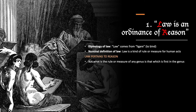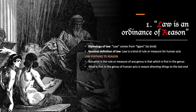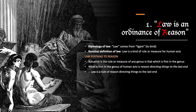What is the rule or measure of any genus of things is that which is first in the genus. For instance, the rule of all yards is the yardstick kept in France, which measures whether or not something is the length of a yard. What is first in the genus of human actions, however, is reason directing things to the last end. This is that aspect in virtue of which things count as human actions — they must be guided by reason. Therefore, law is a rule of reason directing things to the last end. Notice: from first saying that law is a rule or measure of human acts, we conclude that law must pertain to reason, because reason as directing things to the last end is precisely what is most formal in human actions. So law must pertain to reason.